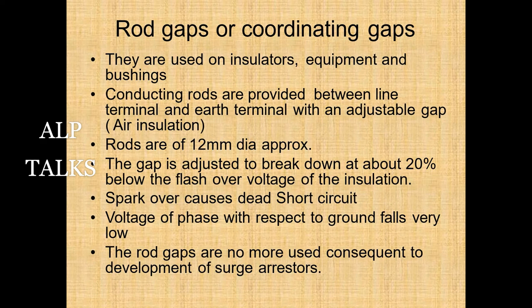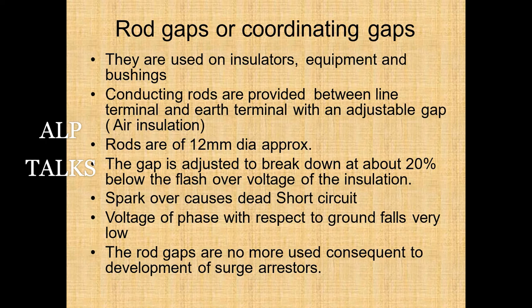Rod gaps or coordinating gaps are used on insulators, equipment, and bushings. Conducting rods are provided between the line terminal and earth terminal with an adjustable gap of approximately 12 mm diameter rods. The gap is adjusted to break down at about 20% below the flashover voltage of the insulation. Spark over causes a dead short circuit. Rod gaps are no longer commonly used following the development of surge arresters, though arcing horns on bushings may still be used as additional protection.